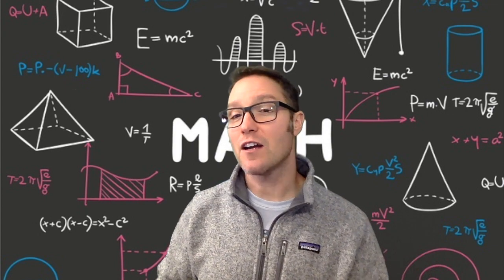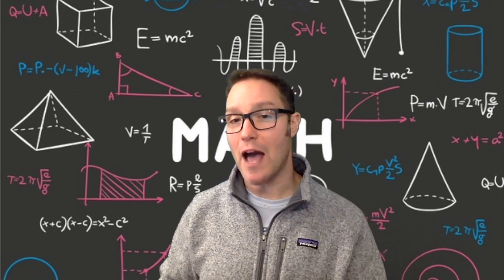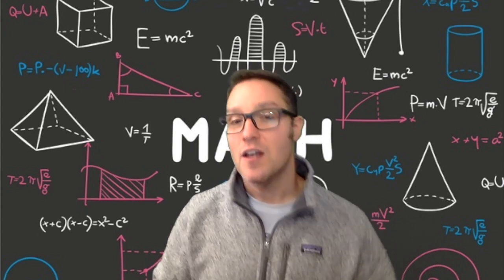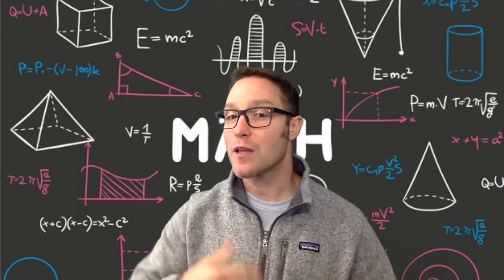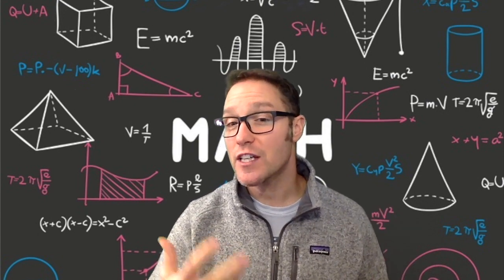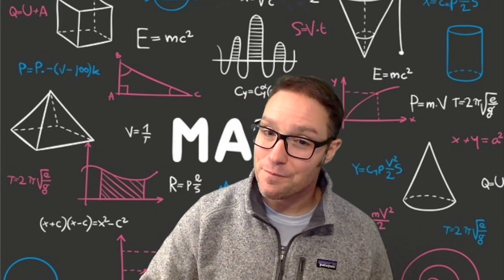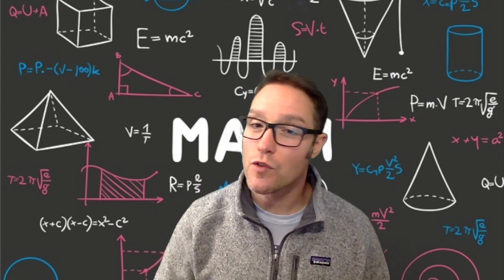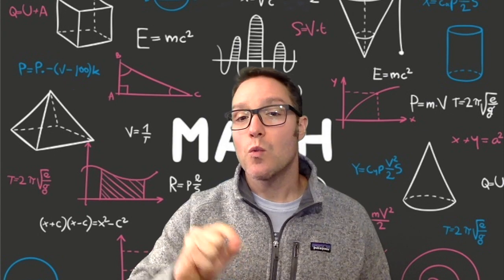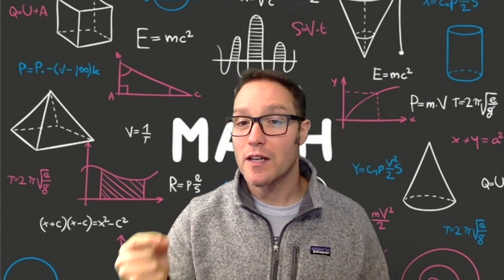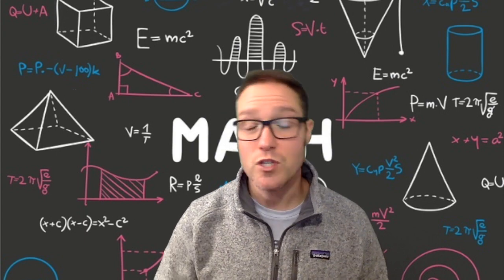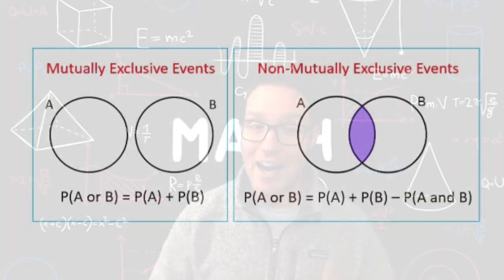What's going on here is when two events overlap, they're inclusive. When you're adding the probability of A plus the probability of B, you're actually double-counting the outcomes that they share. You're double-counting the overlapping section. So we need to adjust by subtracting off the probability of both so that we don't double-count it. We just want to count those outcomes once.